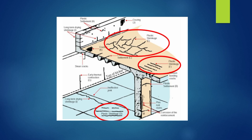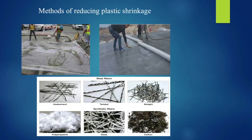How do we reduce plastic shrinkage cracks? In the batching plant, the aggregate is cooled — you can spray water or use liquid nitrogen. Next, after pouring slabs, cover them with a plastic sheet, or spray the surface. Curing compounds are applied to the surface. Shrinkage-reducing admixtures can be added to the batch. Adding fibers also helps reduce shrinkage.